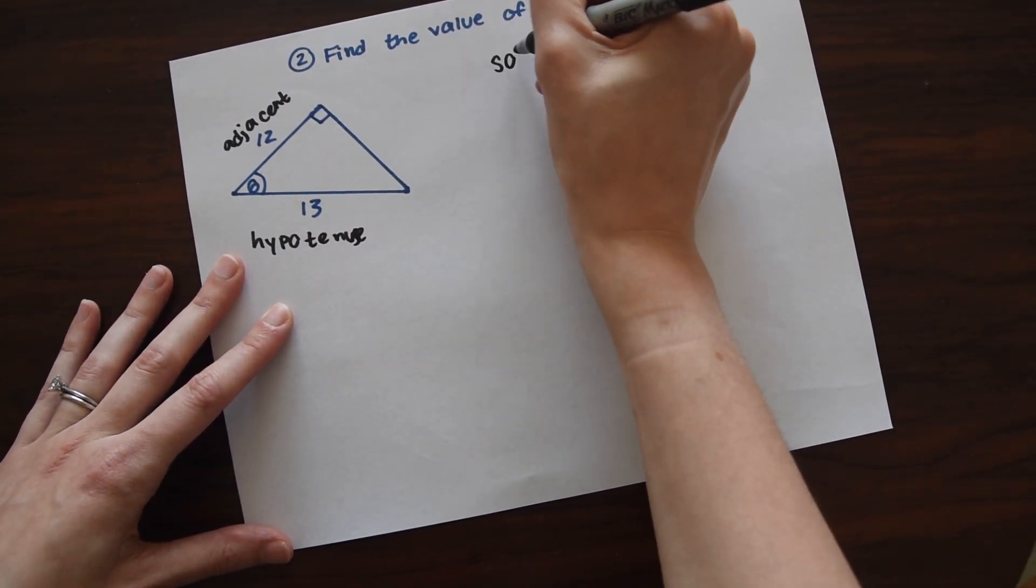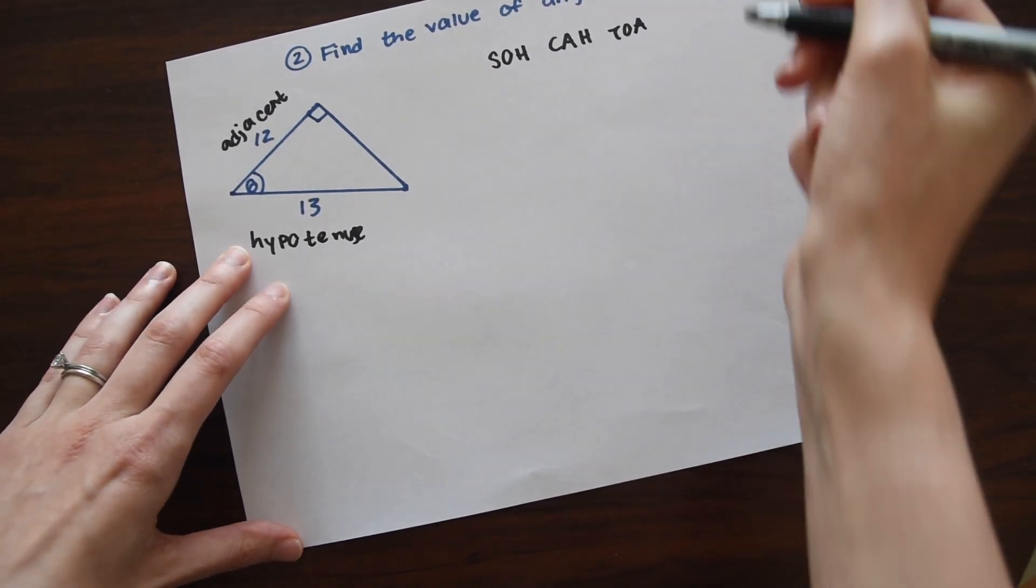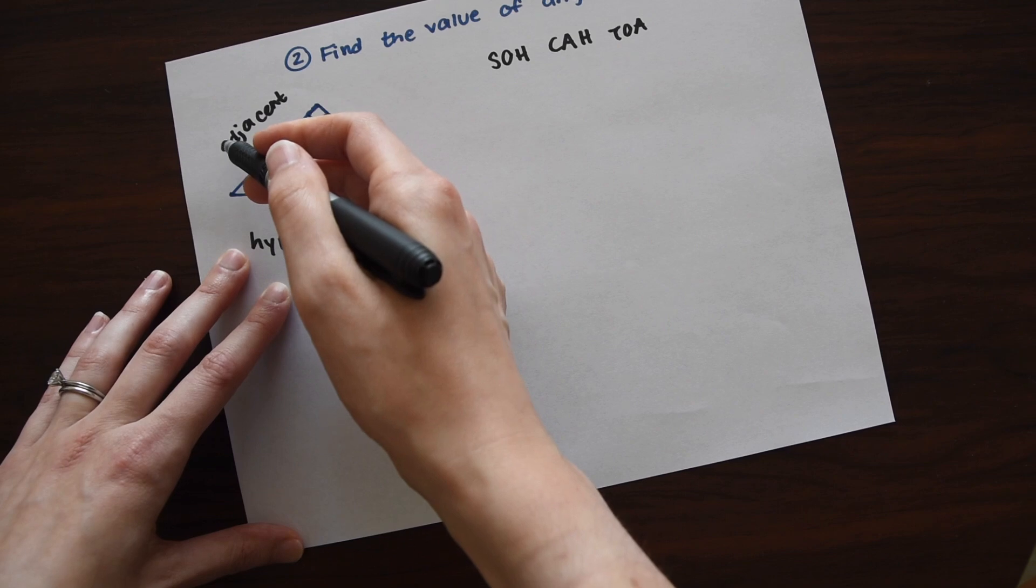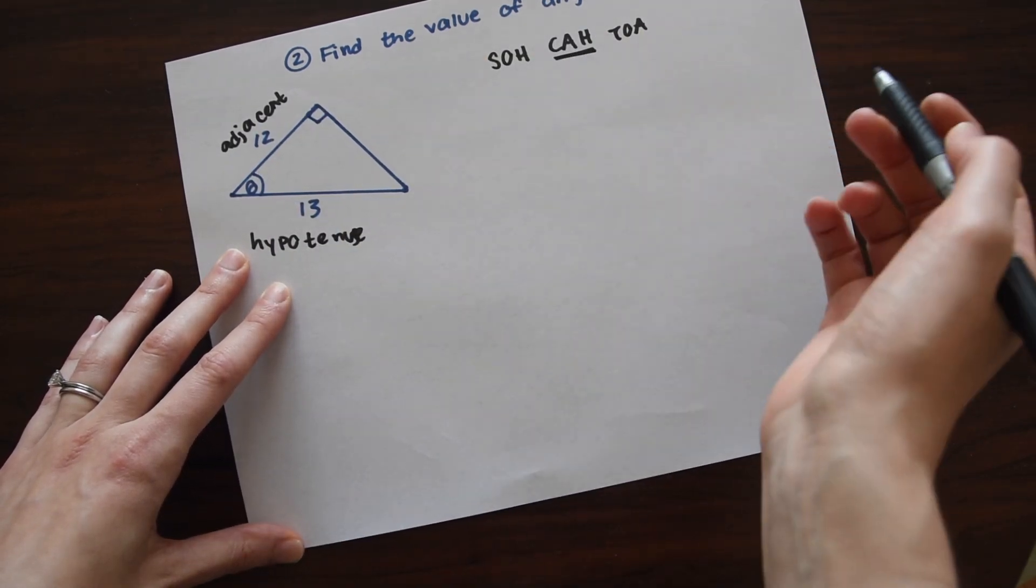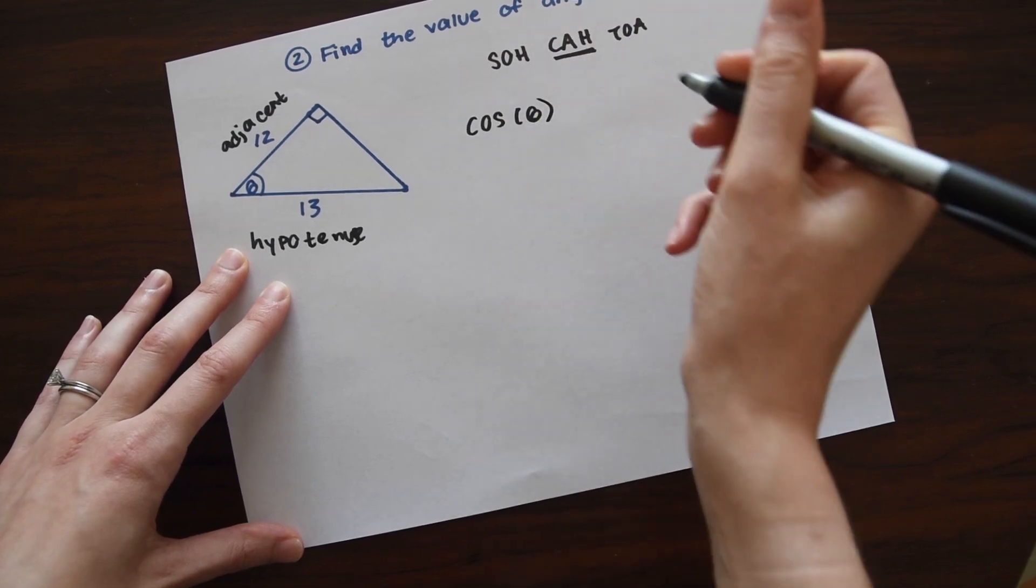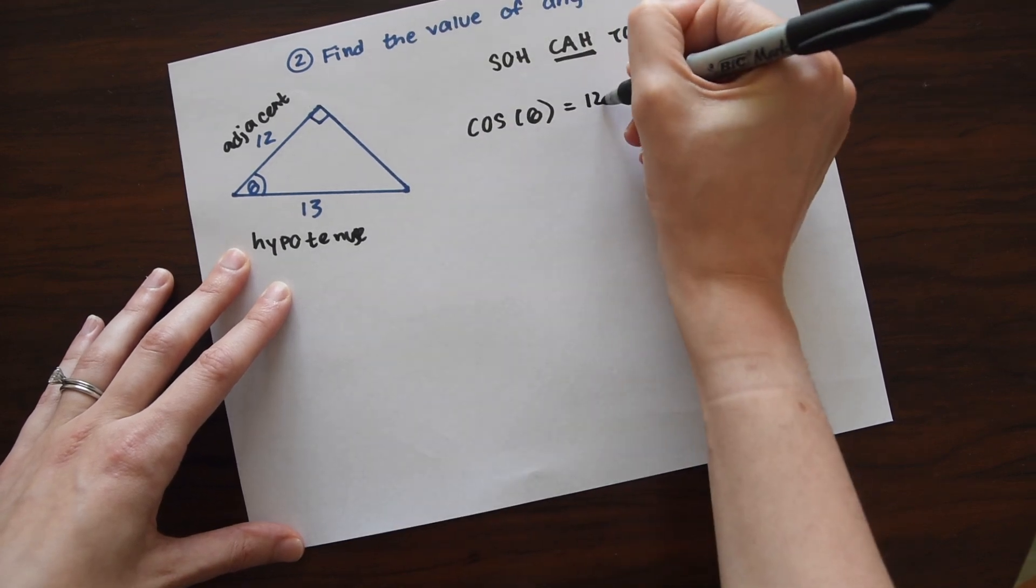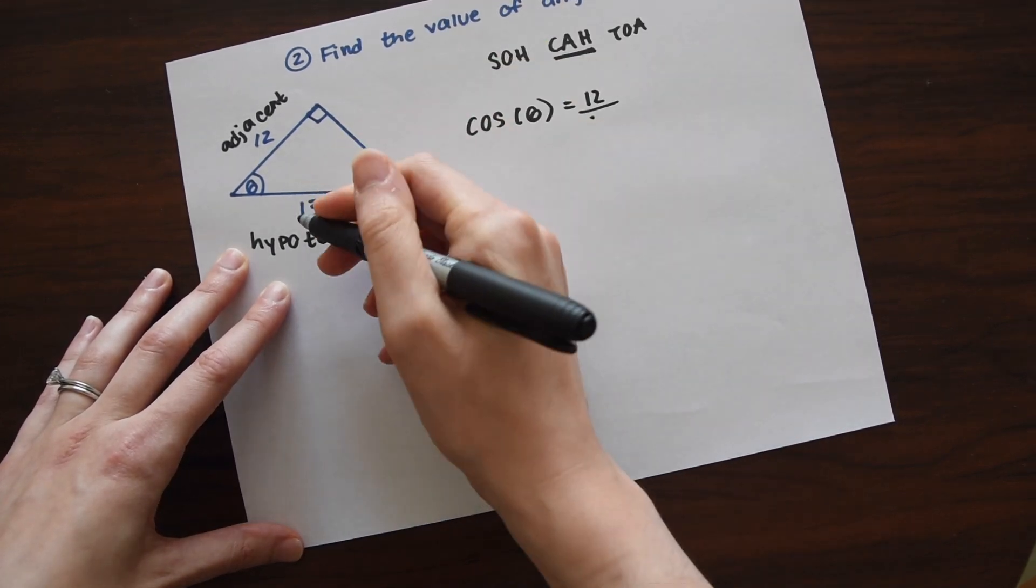So now let's write SOHCAHTOA and see which trig function has the hypotenuse and the adjacent. So that would be cosine. So cosine of theta, we don't know what it is yet, is equal to the adjacent 12 over hypotenuse, which is 13.